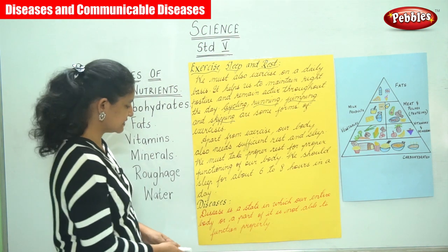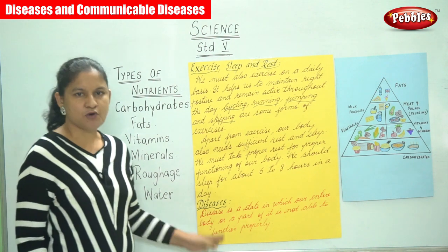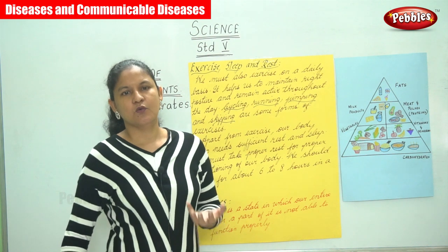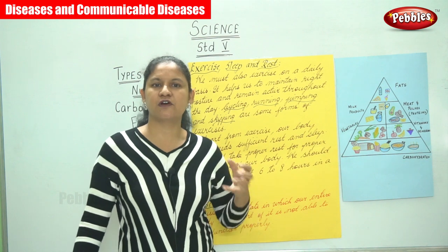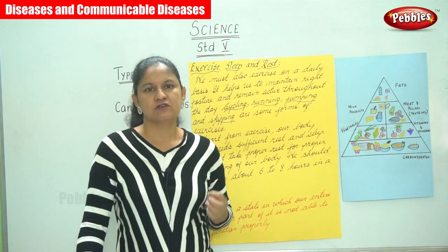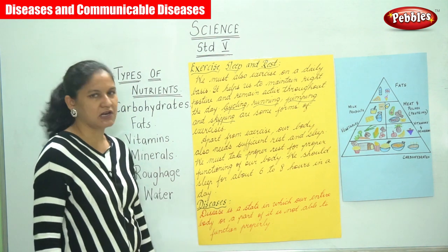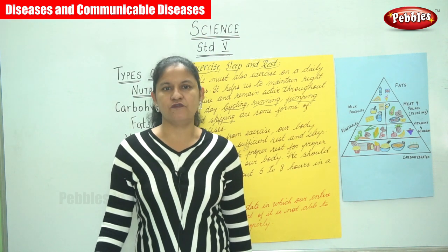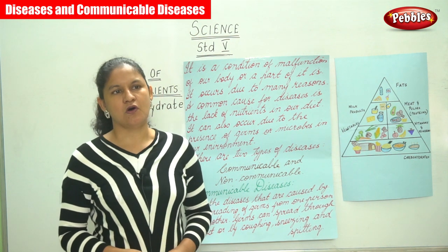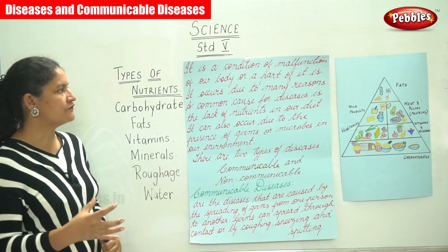Next we are going to talk about diseases. Disease is a state in which our entire body or a part of it is not able to function properly. For example, if we have a problem with our left hand, whatever function the left hand does, it is not able to do it, and we tend to depend wholly on the right hand. So disease is a condition of malfunction of our body or a part of it.